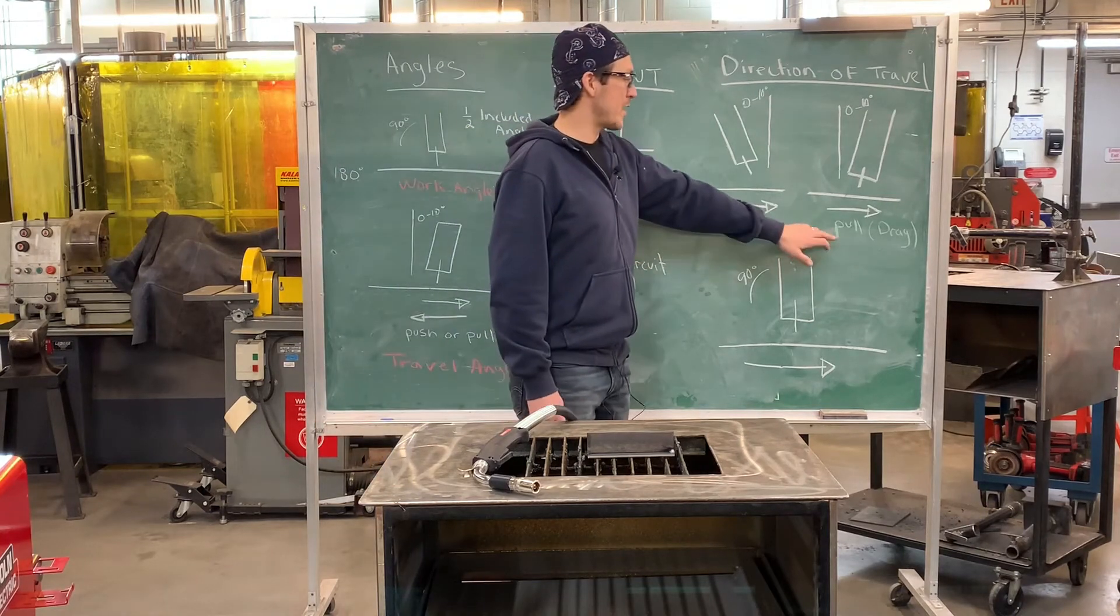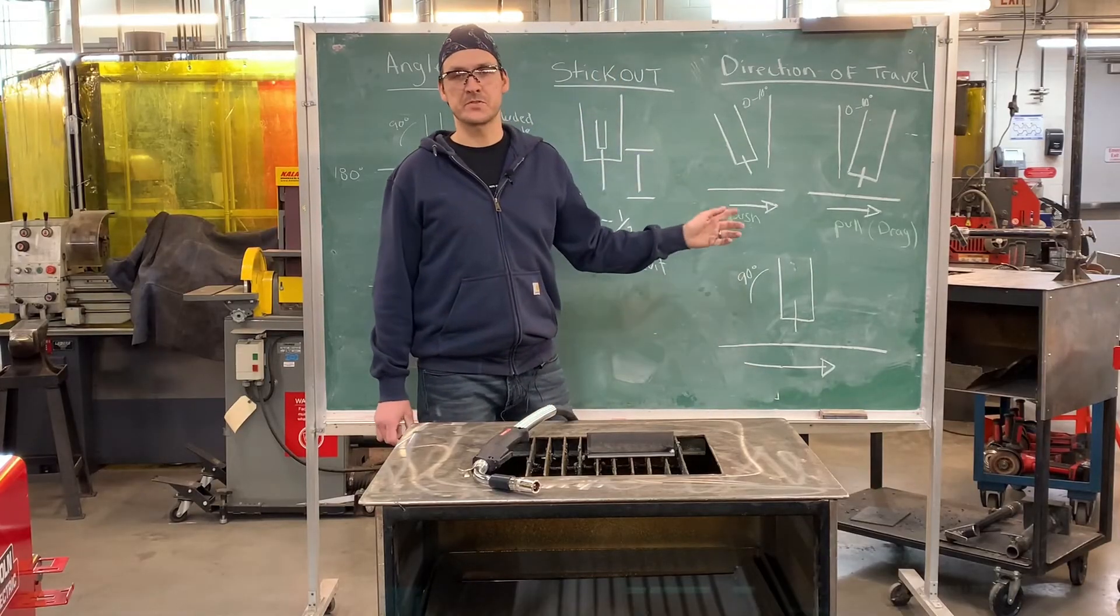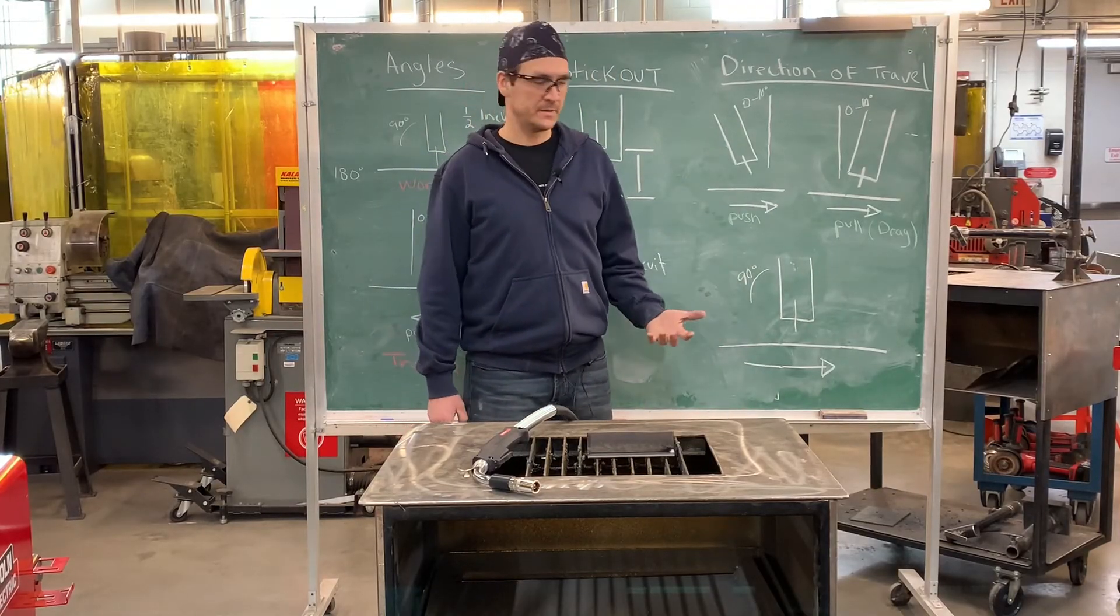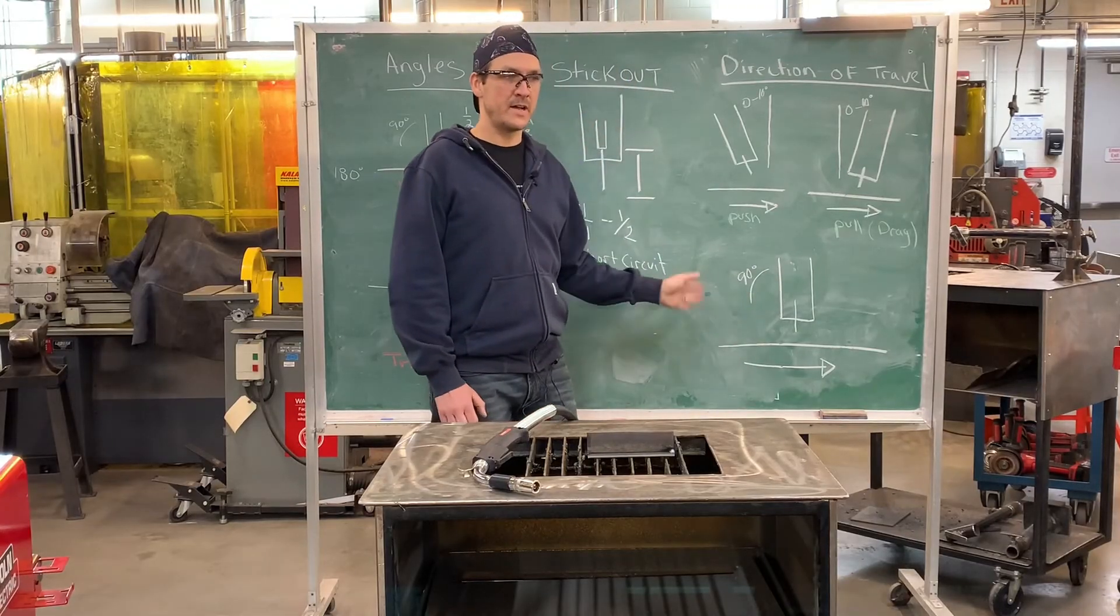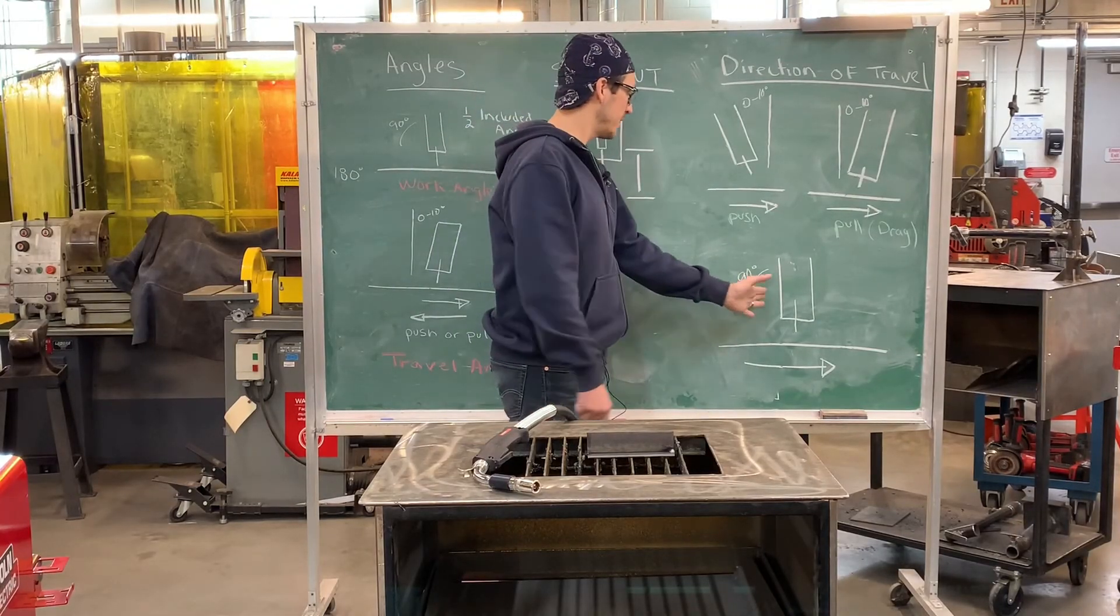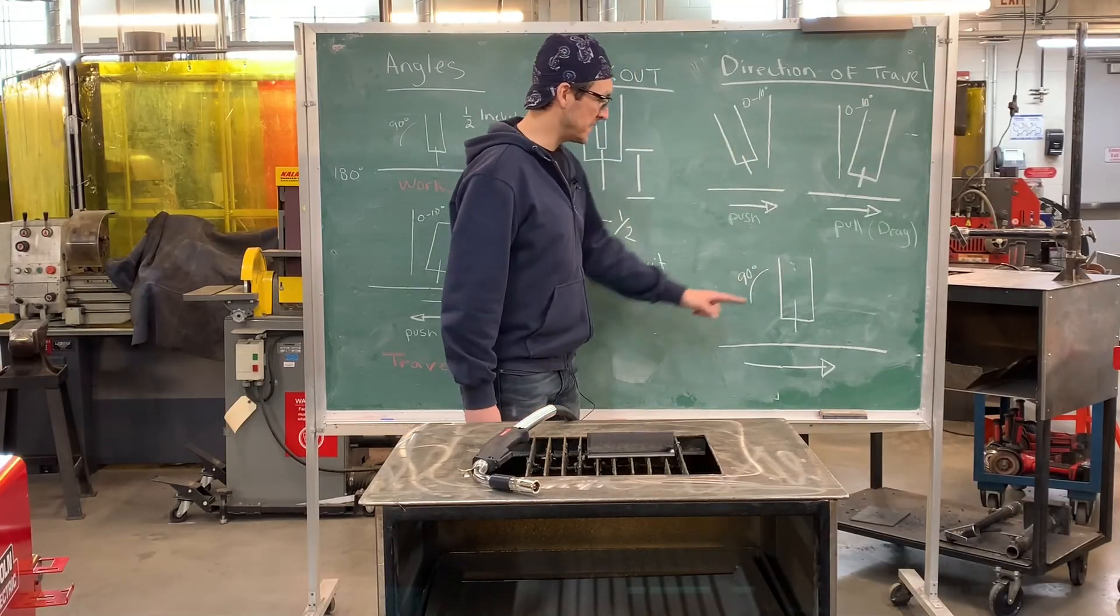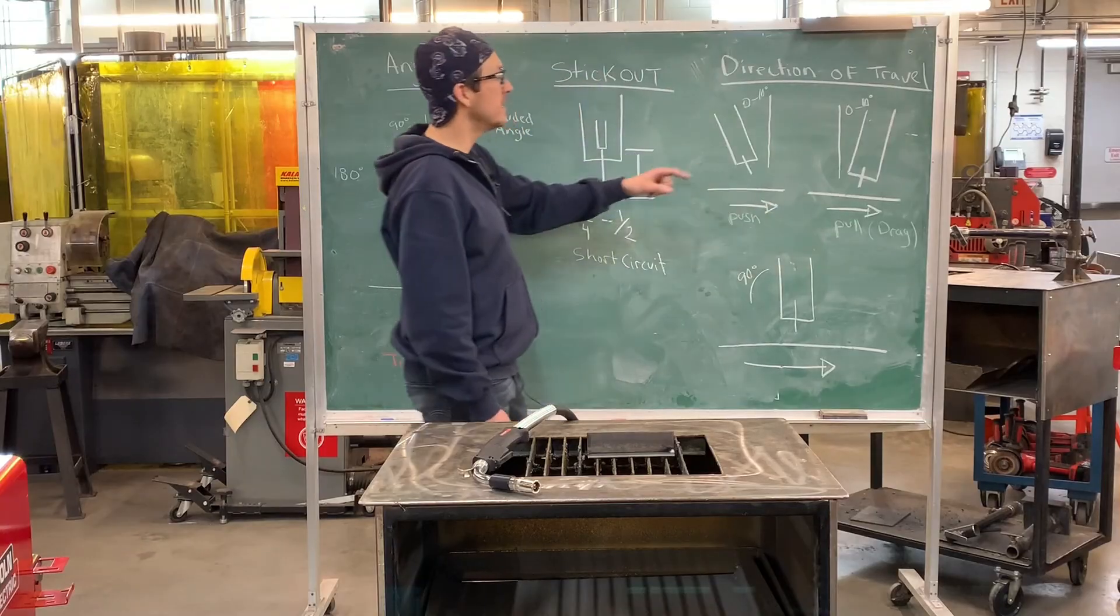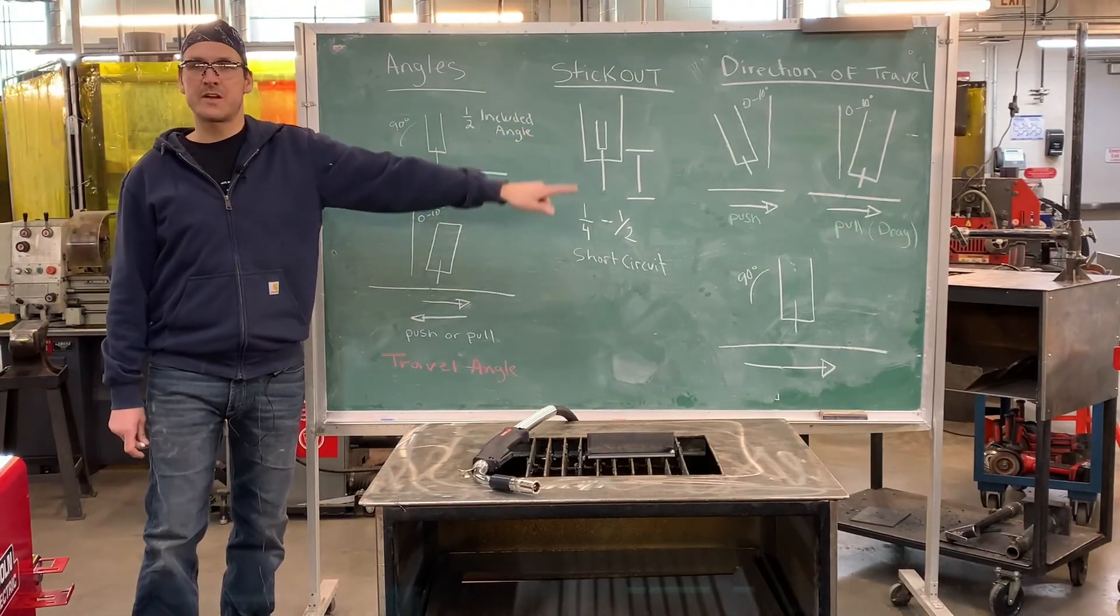If we drag the puddle or pull it, it'll give you more penetration. This is more associated with thicker plate. Some people choose to weld right in the center at 90 degrees, meaning they're not deviating outside of 90 degrees in a push or pull. Keep in mind this is the direction of travel. Three variables: angles, stick out, and direction of travel.